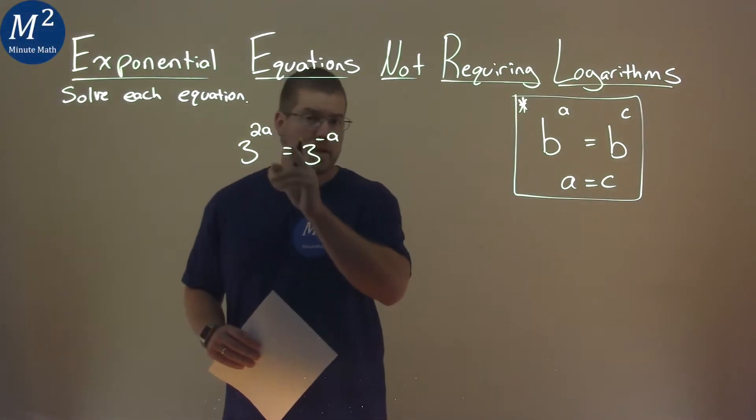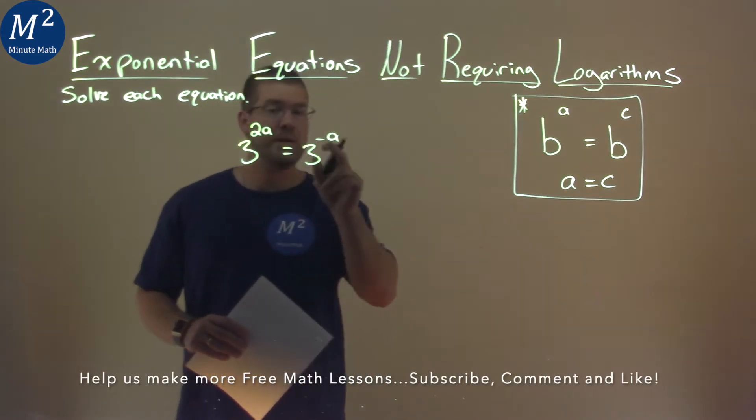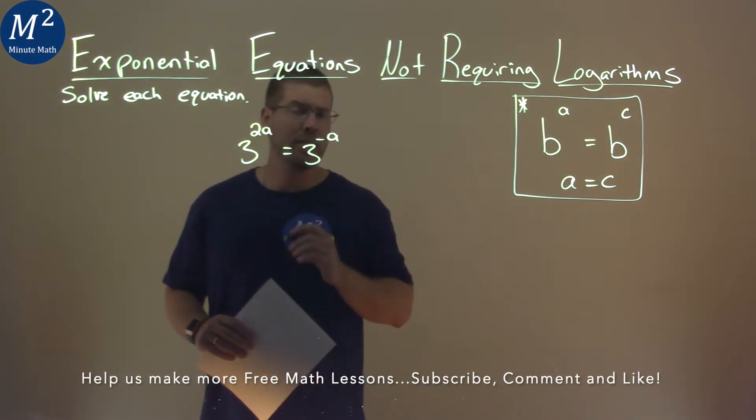We're given this problem right here, 3 to the 2a power equals 3 to the negative a power, and we have to solve this equation.